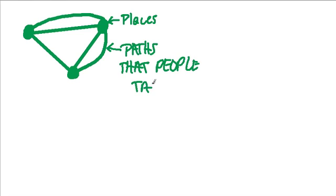For example, perhaps this vertex is a coffee shop and this one is the office. So we are going from the coffee shop to the office. Why would there be multiple paths going from the coffee shop to work?